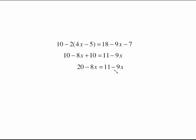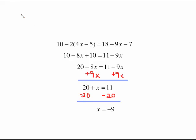Now it's time to solve. The easiest thing to do now is to add 9x to both sides because those are going to cancel. Here negative 8x plus 9x, those are different signs. Keep the sign of the larger and subtract which just gives us 20 plus x equals 11. To get this x alone I just need to get rid of that positive 20 by subtracting 20 from both sides. Those cancel and I'm going to have x equals negative 9 for my answer.